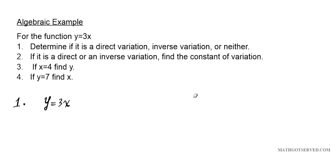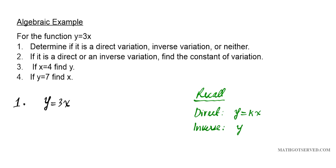Just a quick fact to remember: recall the function form of direct and inverse variation. For direct variation, the function form is y equals kx. For inverse variation, the function format is y equals k over x. We have situations where k is non-zero for both formulations. Now the question is, what format does the function y equals 3x match — direct or inverse variation?